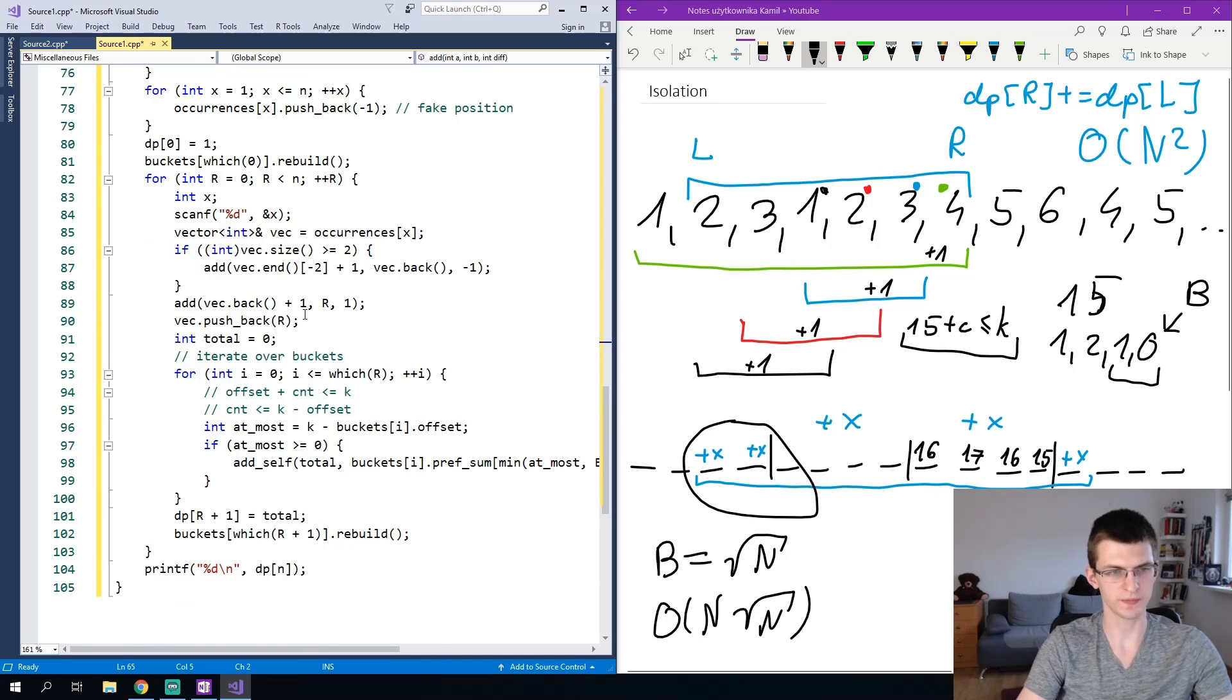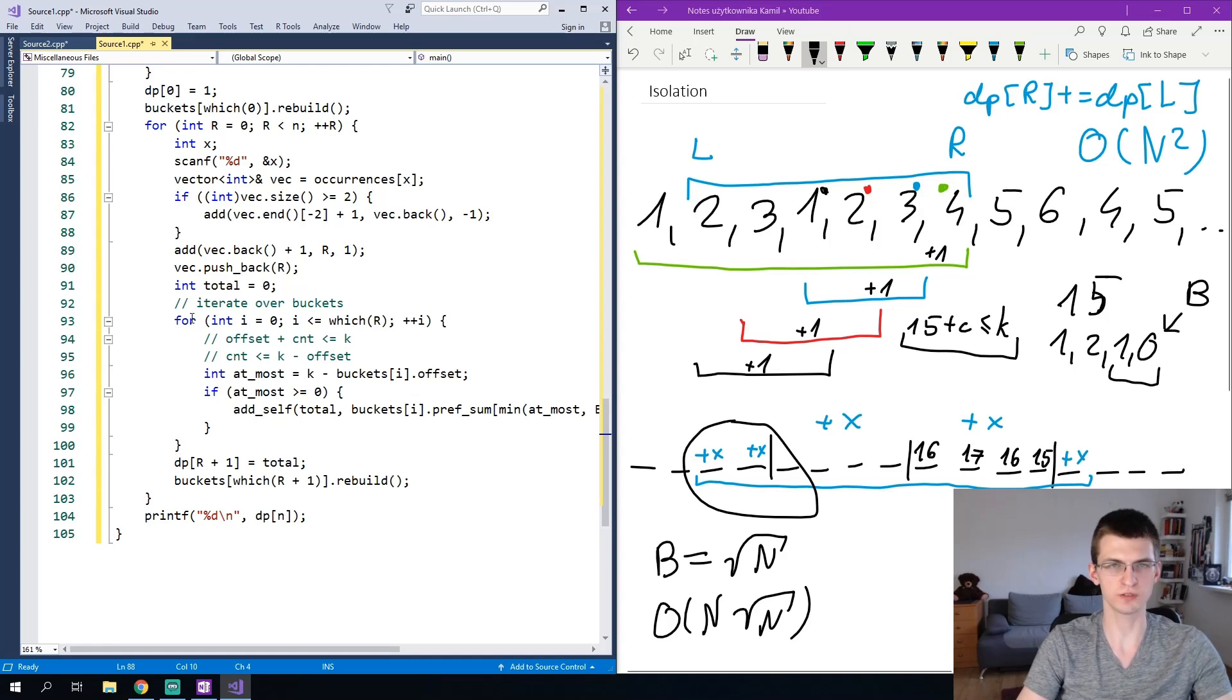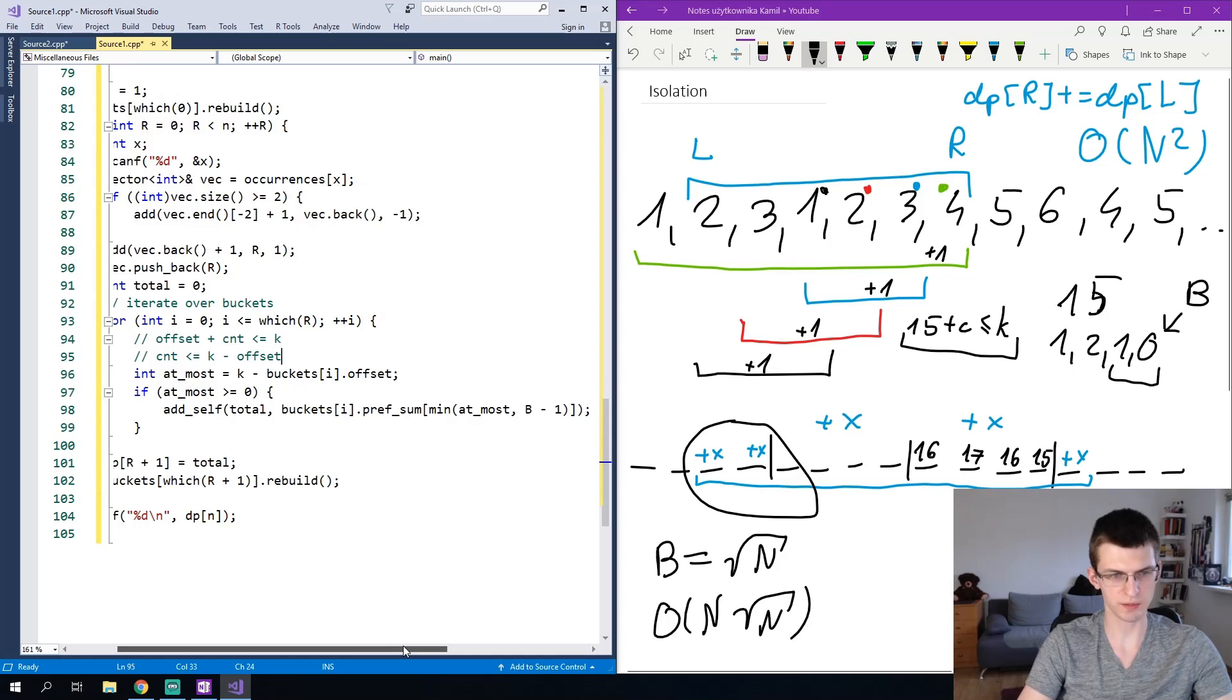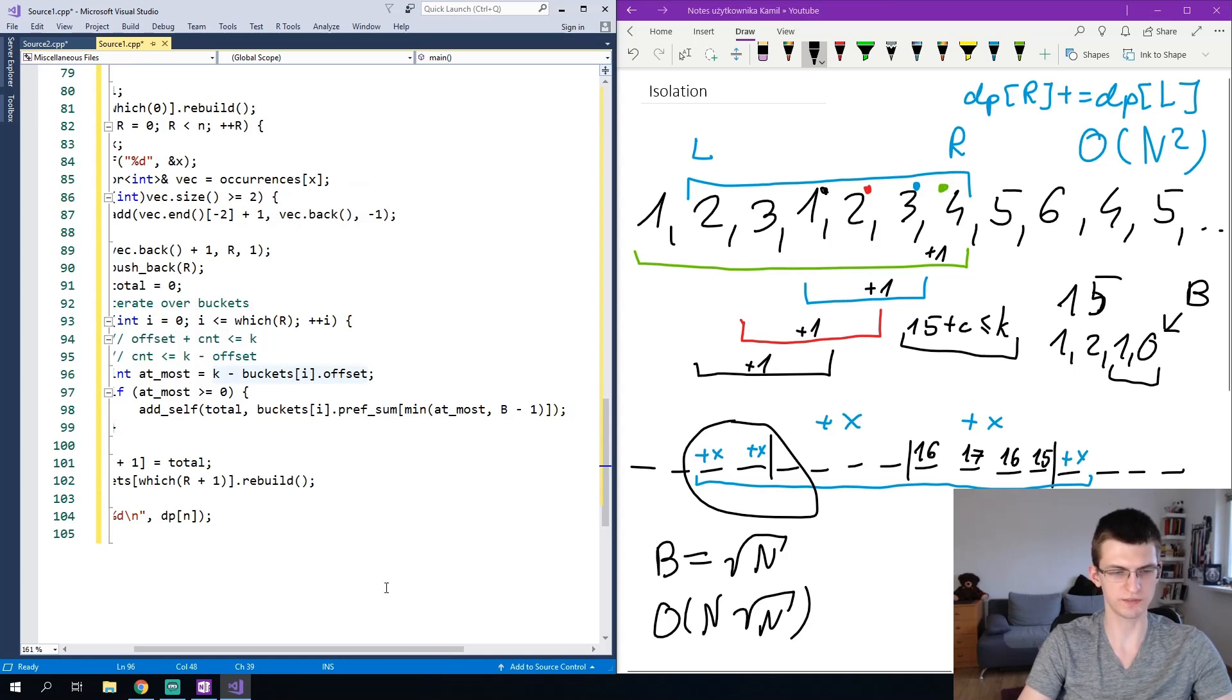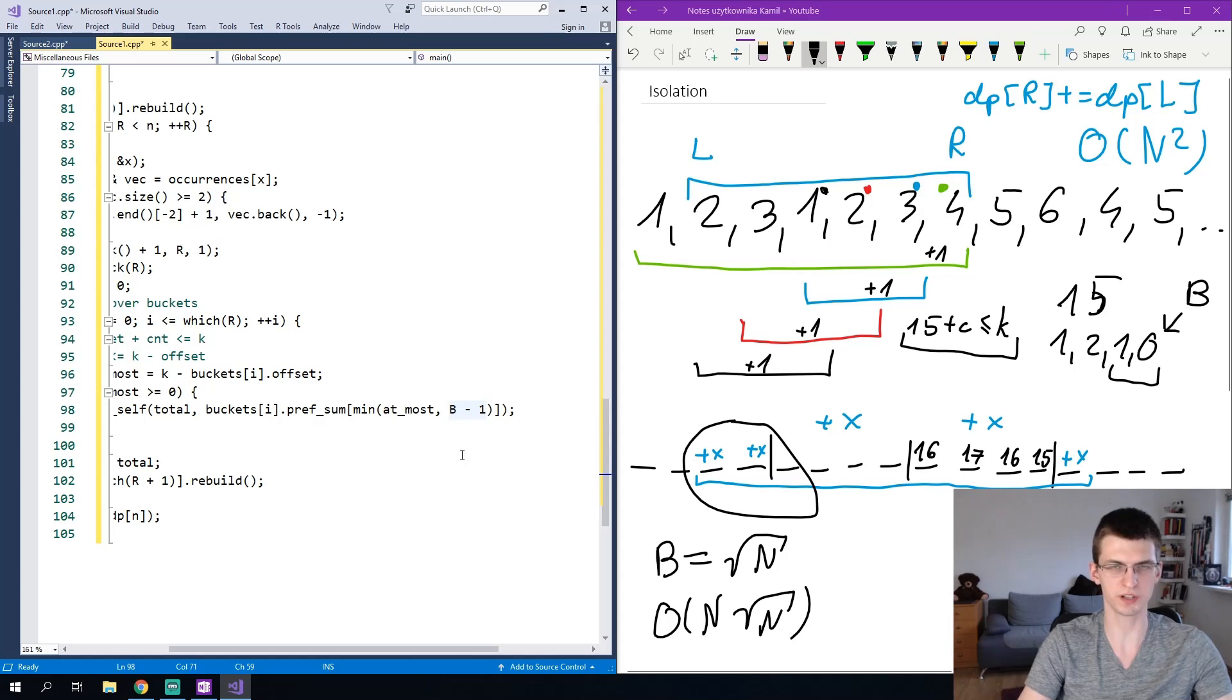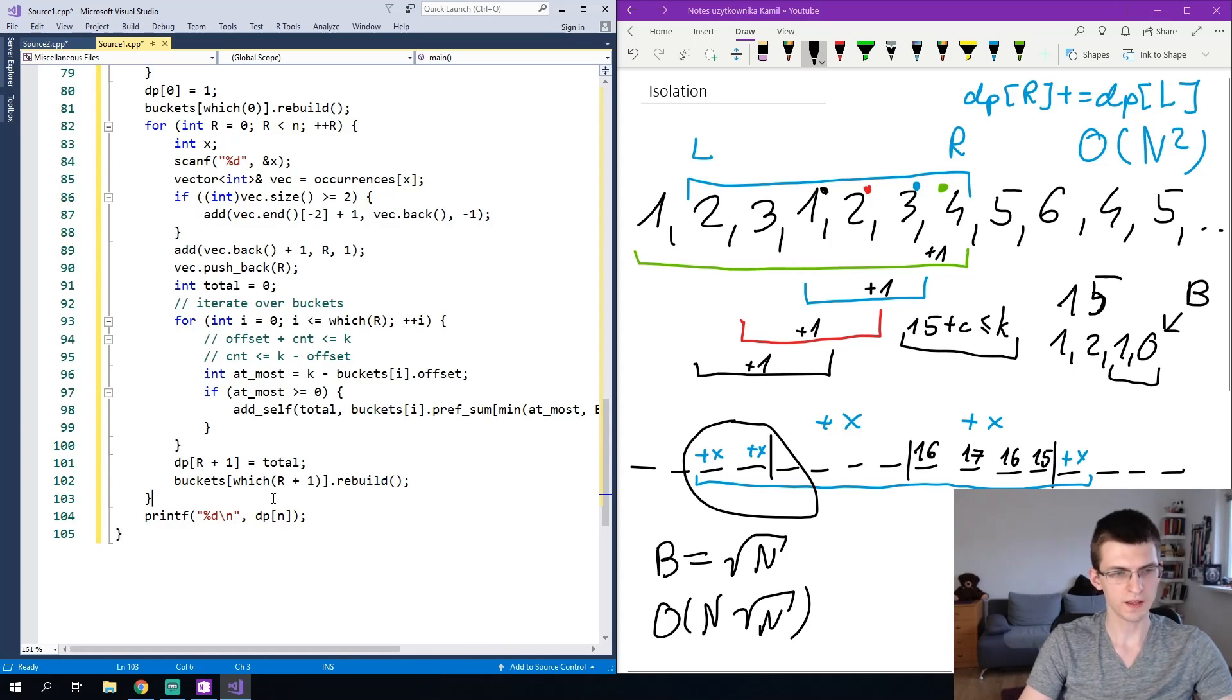And in the main we just run that. Like previously we store the list of occurrences. We'll look at the last two occurrences to do minus one somewhere plus one somewhere. And when we need to compute new dp of r, here we iterate over all the buckets. And we know offset plus count must be smaller equal k, like I wrote on the right. So count must be up to k minus offset. So I just ask prefix sums about prefix sums of this at most of this difference. Just I must minimize this with b minus one because the array is up to b. And we put dp of r plus one is total, the sum that I found. And I rebuild this bucket with new value at r plus one. So that the offset of this bucket would be correct. And I could ask it questions in constant time.